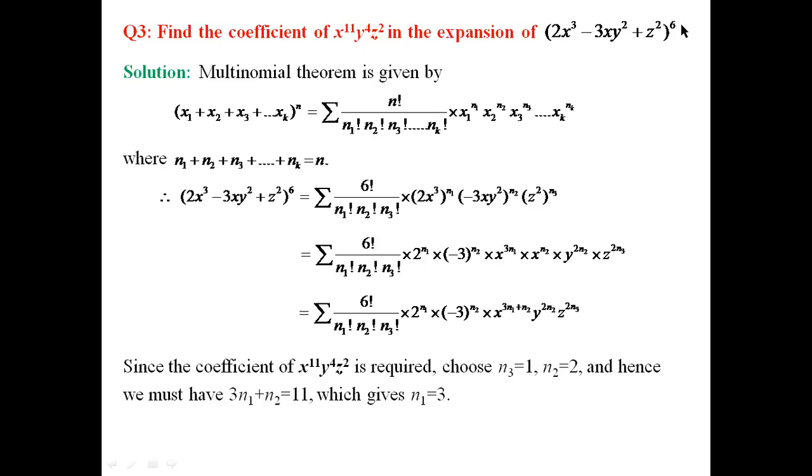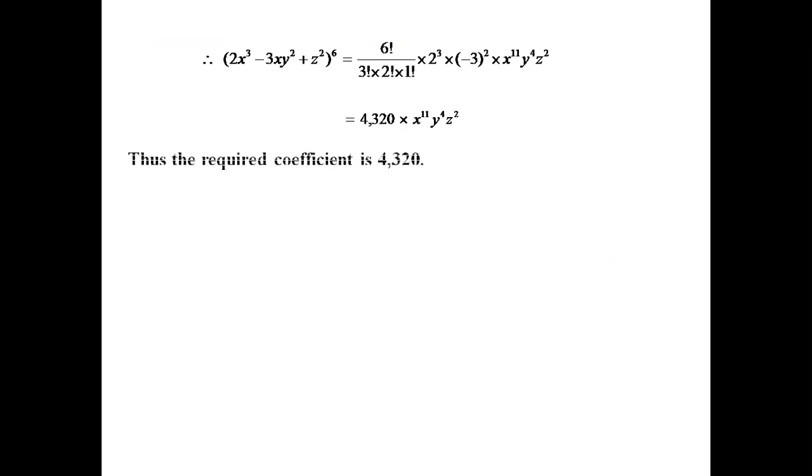Substituting n1 = 3, n2 = 2, n3 = 1 in the previous step: 6! / (3! * 2! * 1!) * 2^3 * (-3)^2 * x^11 * y^4 * z^2. This on simplification gives us 4320 * x^11 * y^4 * z^2. Thus the required coefficient is 4320.